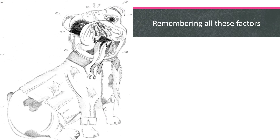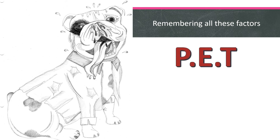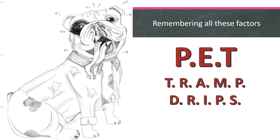So, how do you remember all these factors? The overarching acronym is PET. To help remember the sub-factors, we have a sociological pet dressed as a tramp who is dripping sweat and picking his nose — so: PET TRAMP DRIPS PICK. This provides the basic practical, ethical and theoretical factors for answering these questions. It's not exhaustive — there are additional factors depending on the method — but it gives you a good basis for your writing.